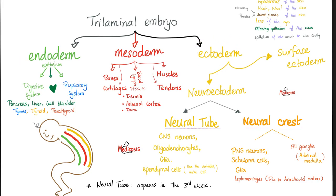The ectoderm on the outside gives us the surface ectoderm — the epidermis of your skin, hair, nails, etc. The ectoderm also gives you your nervous system: central and peripheral. The endoderm on the inside gives the epithelium of the digestive system, cardiovascular system, respiratory system, and other accessory organs. The mesoderm in between gives bones, cartilages, tendons, muscles, blood, lymph, blood vessels, lymph vessel walls, the dermis of the skin (but the epidermis was ectodermal), the adrenal cortex (the adrenal medulla was ectodermal), and the dura mater.